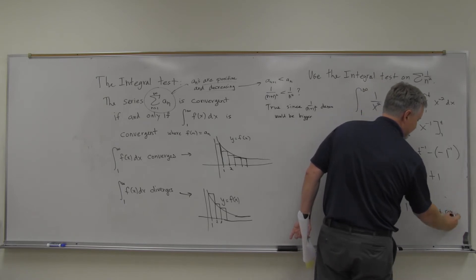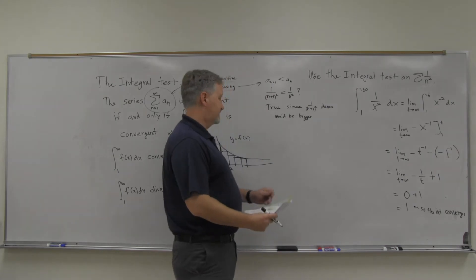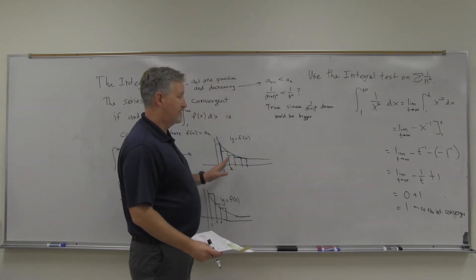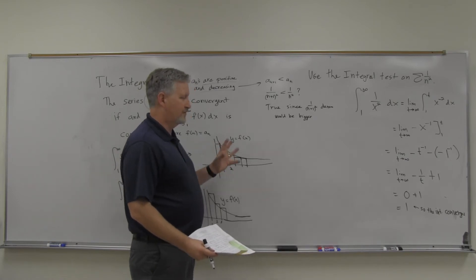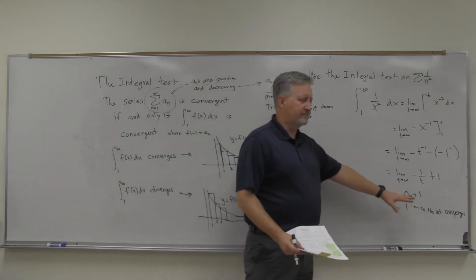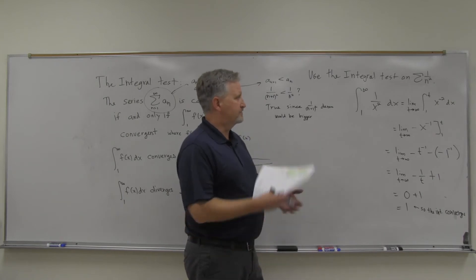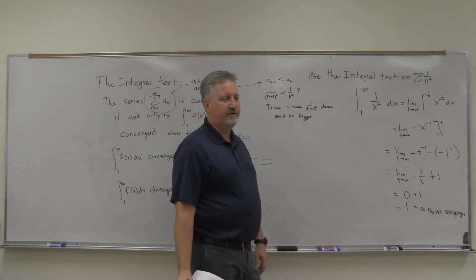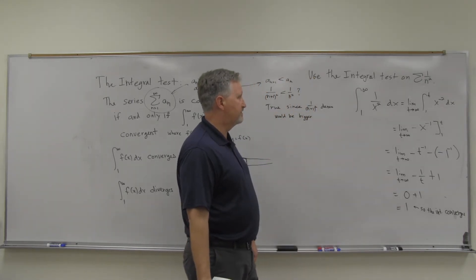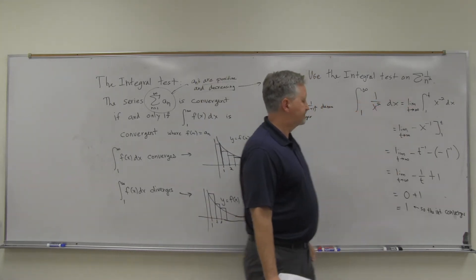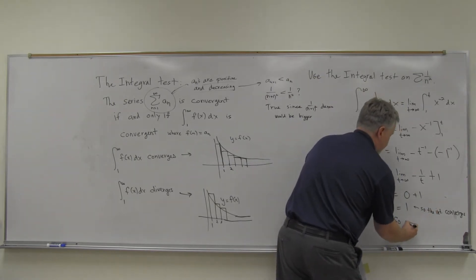We've got the limit as t goes to infinity of negative t to the negative one, minus negative one to the negative one. Flipping those: minus one over t, plus one. As t goes to infinity, one over t goes to zero, so we get zero plus one, which equals 1. The integral converges. Therefore the series one over n squared also converges.